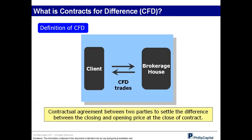Simply put, a CFD is a contractual agreement between two parties. Looking at this picture, the agreement is between the brokerage house — my company — and the client. The 'difference' refers to the difference between the closing and opening price at the close of the contract.